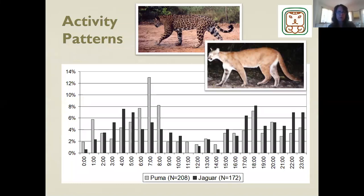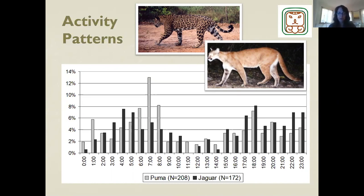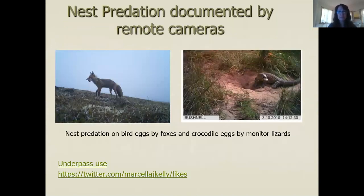Because cameras have date and time stamps, we can figure out when animals are most active. Comparing jaguar and puma activities, we can see they're actually very similar — pumas are slightly more active in the morning, but both are not very active in the middle of the day, picking up in the evenings and very early mornings. This gives us information on timing of activity.